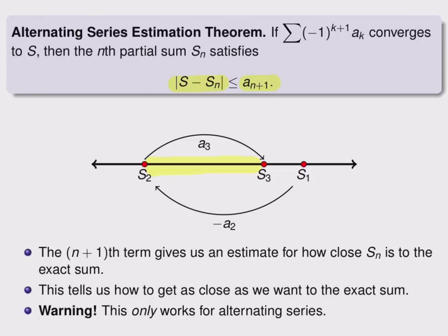That means that the distance between the real sum, which might be around here, and the last partial sum that we've looked at, can't be any bigger than the next term, a_k, in the series, because that term can't be any bigger than the yellow highlighted area.